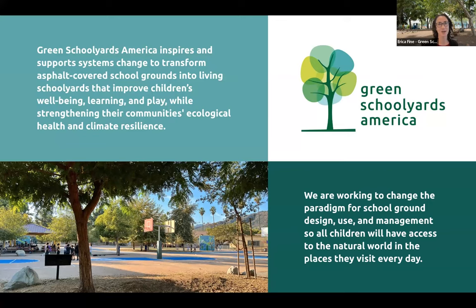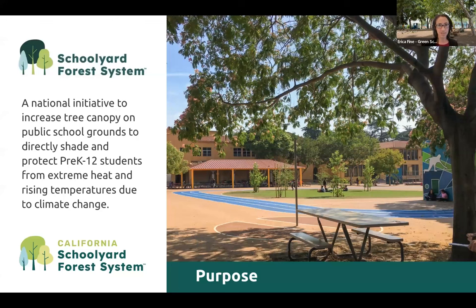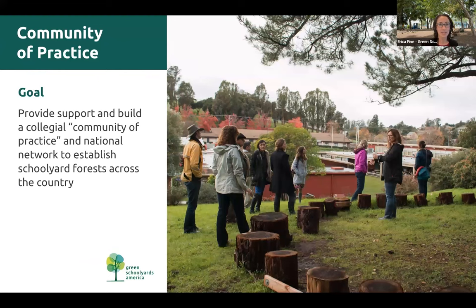By way of introduction, Green Schoolyards America is a nonprofit based in Berkeley, California. We inspire and support systems change to transform asphalt-covered school grounds into living schoolyards that improve children's well-being, learning, and play, while strengthening their community's ecological health and climate resilience. This community of practice is part of the new national schoolyard forest system that we launched last year to help school districts across the country increase tree canopy on school grounds to shade and protect pre-K to 12 students from extreme heat due to climate change. This community of practice is also connected with the California schoolyard forest system, which is the first state in this national initiative. It is free, open, welcoming, and a monthly discussion for anybody interested in helping establish schoolyard forests at scale.